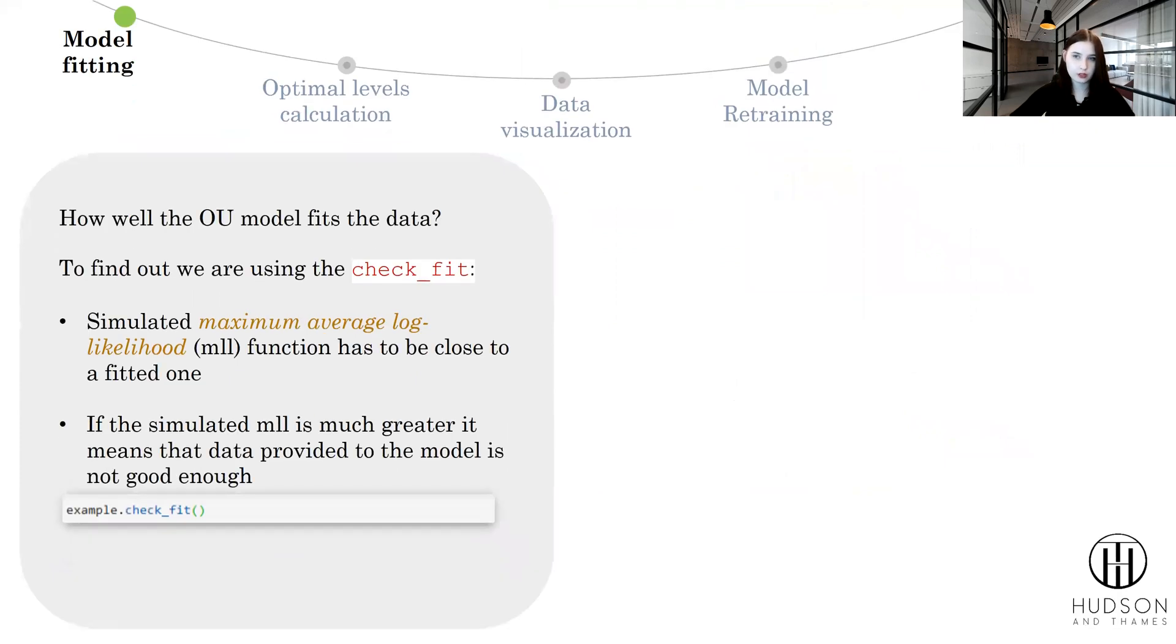Also, the main question is how well the OU model fits the data, because you can provide any type of data and the model will fit it at least somehow. But how to determine the goodness of fit? To find that, we're using the check_fit function.